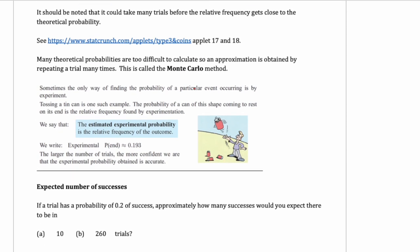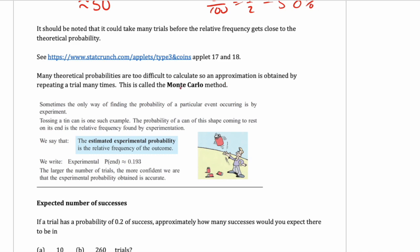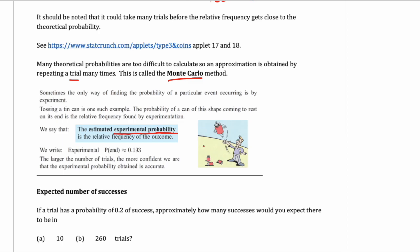Many probabilities are too difficult to calculate, so you have to repeat a trial many times — like repeating a coin flip. This is called the Monte Carlo method. Experimental probability is the kind of probability you can only calculate through experiment, like the percentage of time you hit a basket when you shoot a field goal in basketball. The only way to calculate that is to try it many times and work out the percentage.